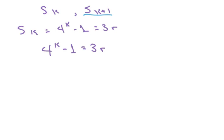And the next thing we're going to do is rewrite the left side so that matches the right side. So we have the left side of Sk, and we want to match it to the left side of Sk plus 1. So first of all, we have Sk, and that's going to be 4 to the k minus 1 equals 3r for some integer r. We want it to look like 4 to the k plus 1 minus 1 equals 3t.